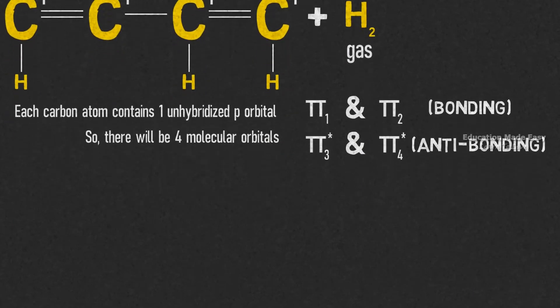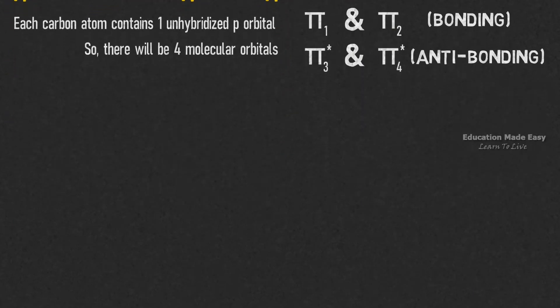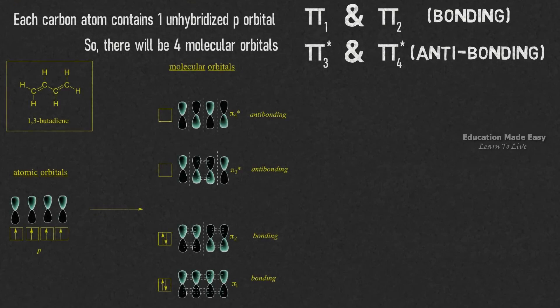Let us draw the diagram of 1,3-butadiene. The molecular orbital energy increases in the upward direction for 1,3-butadiene.